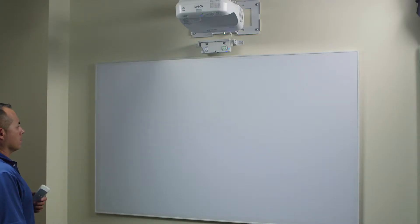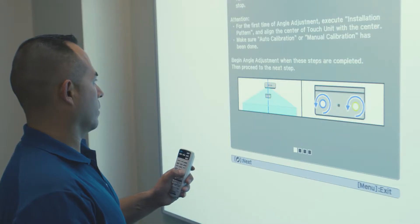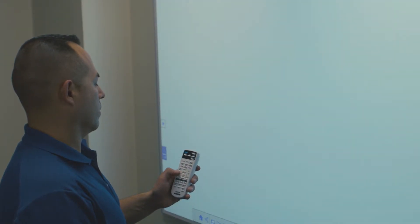When pen calibration is completed, we can now calibrate for finger touch. We will start by setting the angle of the touch module to match the angle of the board.